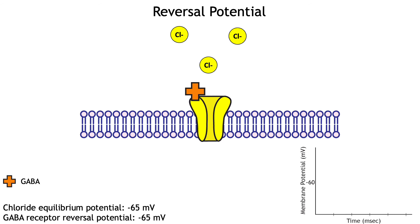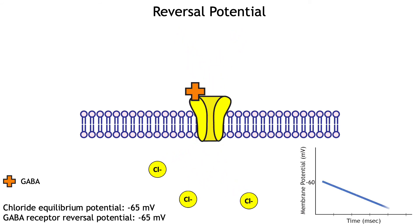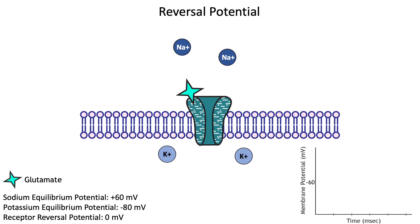GABA and glycine receptors only allow chloride ions to cross the membrane. Therefore, the reversal potential of a GABA or glycine receptor is equal to the equilibrium potential of chloride, and the binding of GABA or glycine to their respective ionotropic receptors will cause an inhibitory postsynaptic potential, or IPSP. However, if the ionotropic receptor allows the flow of more than one ion, or is non-selective, the reversal potential of the receptor does not equal the equilibrium potential of either ion but is somewhere in between.